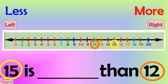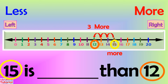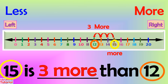In the given question, 15 is blank than 12. Let's circle 15 and 12 on the number line. 15 is at the right side, so it is bigger or more. Then we count back until 12 to see how many more 15 is compared to 12: 1, 2, 3 — 3 more. Therefore, we'll write: 15 is 3 more than 12.